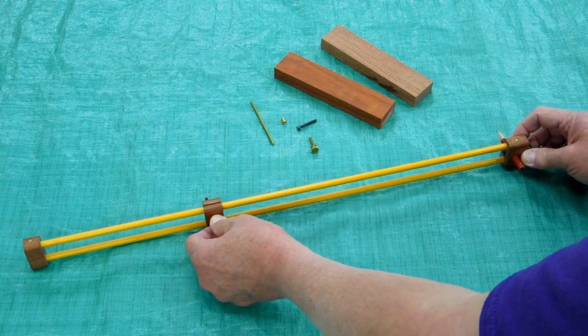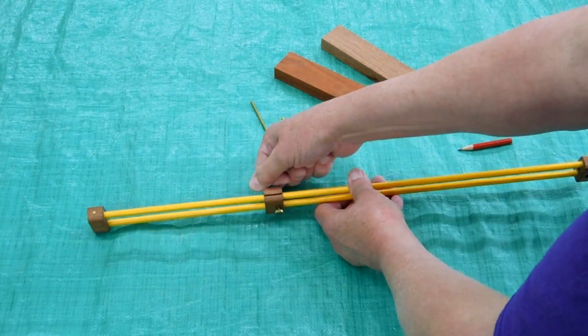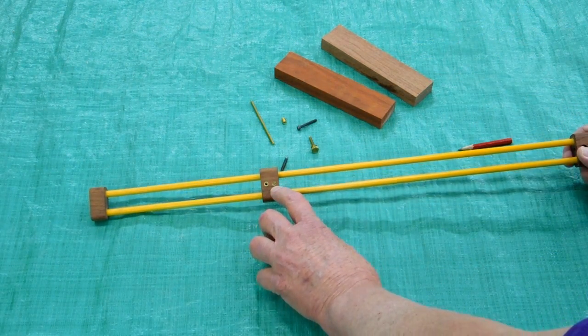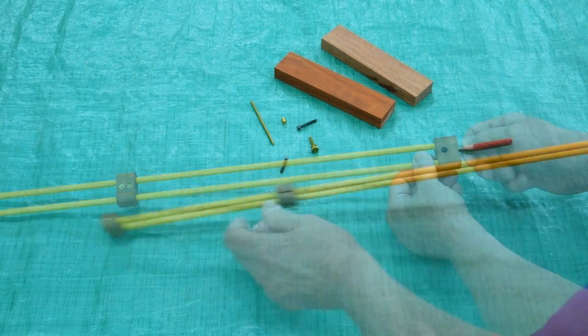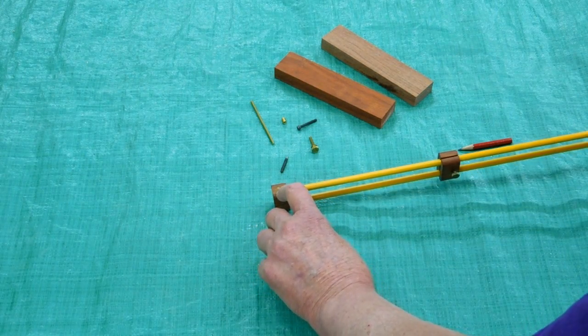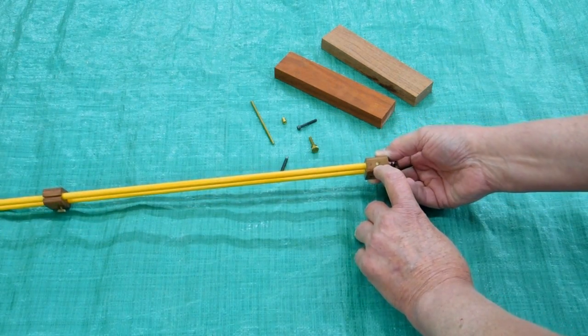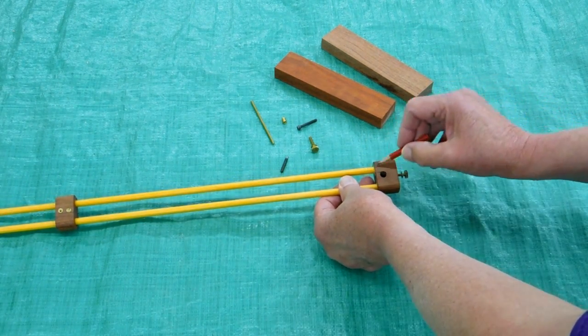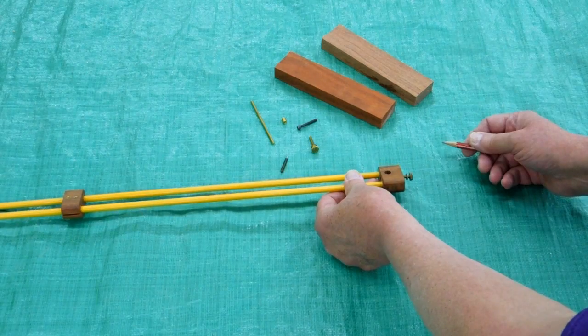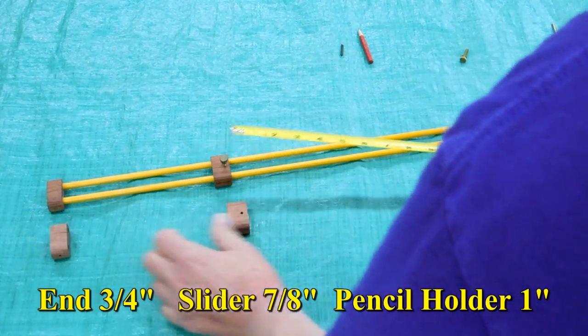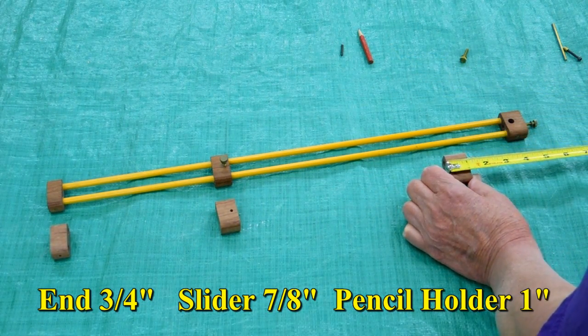That screw is in here as your pivot. You have one thumb screw on the slider. And you have one to hold the pencil. Two metal threaded inserts are used on the slider. And one is inside here for this thumb screw. This end piece is pinned on both sides with the brass rod. And this is pinned on both sides for the brass rod. The brass rod only goes through the fiberglass and into the wood on the other side. It does not go all the way across. This end piece is three quarters of an inch long. The slider is seven eighths of an inch long. And the pencil holder is one inch long.